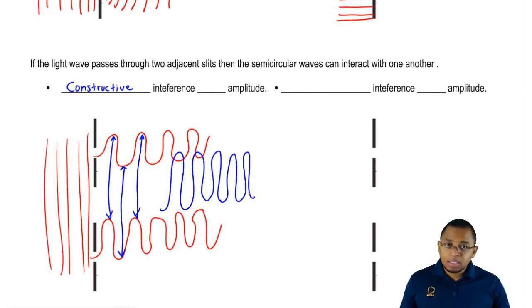We're going to say constructive interference, since it's increasing the height by so much, the height of the wave, increases our amplitude.